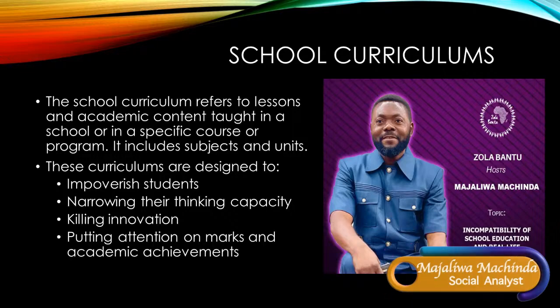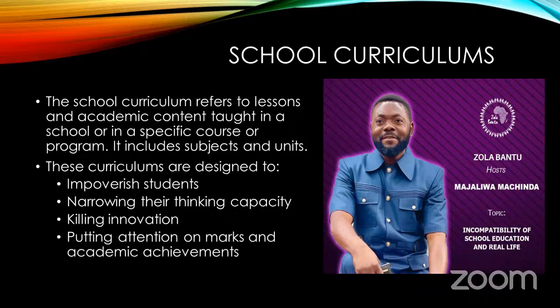Whoever does not score high enough is not given an opportunity to attend university — but those who don't go to university begin businesses, and within four years they begin to employ those who went to university. That's why there are now bills being passed and people rioting, because unemployment is rampant and there are too many graduates.